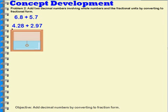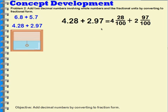Let's try this one: 4.28 plus 2.97. I want to convert these to fractions first. 4 and 28 hundredths plus 2 and 97 hundredths. I can add my 4 and my 2 together and make 6. And then I can add my 28 and my 97 together. And that's going to give me 125. So I would have 6 and 125 hundredths.